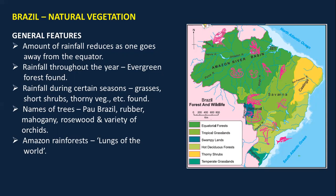The major trees found in Brazil are pau Brazil, rubber, mahogany, rosewood, and a variety of orchids. Amazon forests are said to be the lungs of the world — a very important give-reason question. Amazon forests are called the lungs of the world because it is a very dense forest and trees inhale carbon dioxide and give out oxygen.